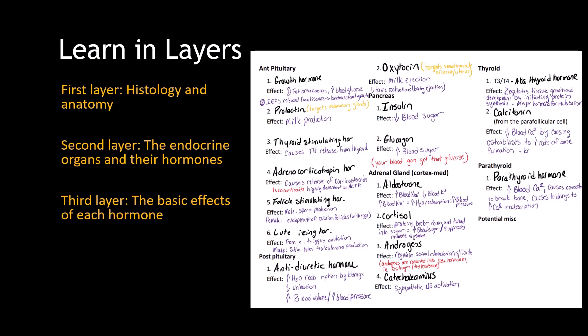The third layer is you're going to want to understand and memorize the basic effect of each hormone. When you're first learning, you might fill in this outline a little more simply than I have done here. For example, parathyroid hormone — instead of filling out all this information, you can just say it increases blood calcium. That is good enough to start with.